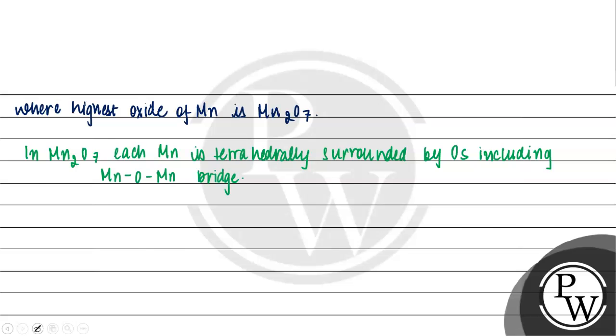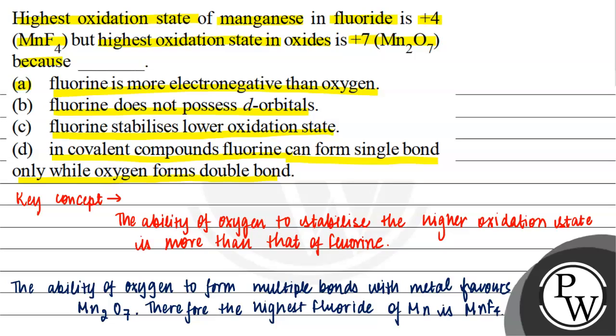If we look at the options, option D will be the right answer. Because as we just saw, in covalent compounds fluorine can form single bond, and if we look at structure of Mn2O7, it forms double bond. That's why it forms a structure of Mn2O7.